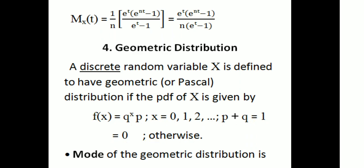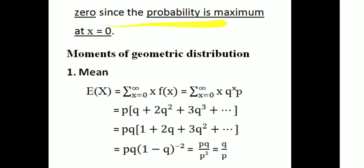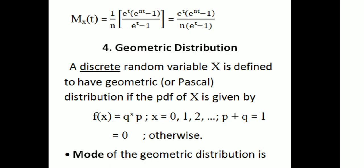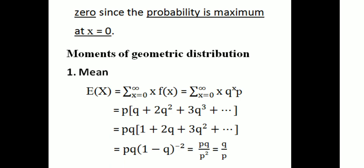Otherwise, f(x) = 0. The mode of the geometric distribution is 0, since the probability is maximum at x = 0. The maximum probability occurs at x = 0, which means the mode of the geometric distribution is at x = 0.